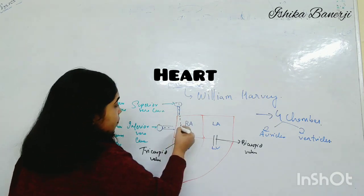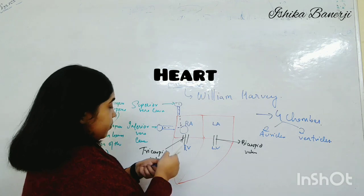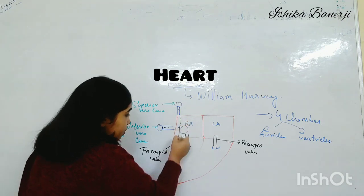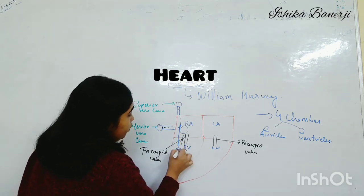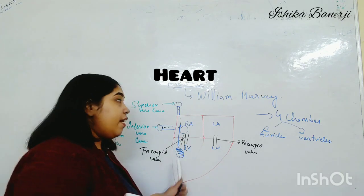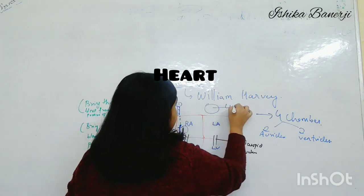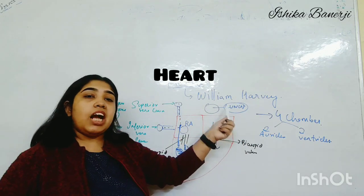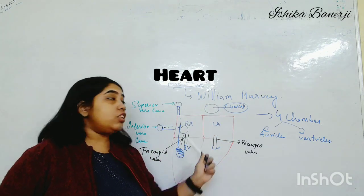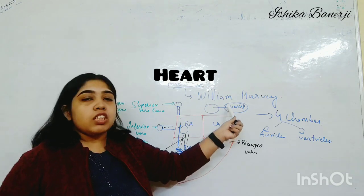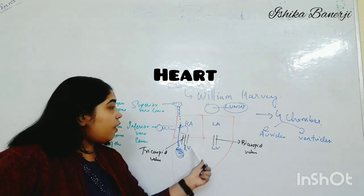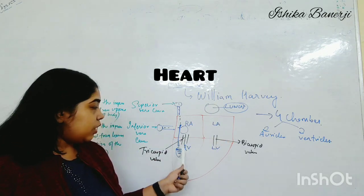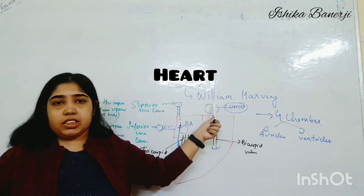So the blood comes into the right auricle. From the right auricle it passes to the right ventricle — this is the impure blood. From the right ventricle it will go to the lungs. In the lungs, purification takes place: oxygen is added to the impure blood, making it pure.